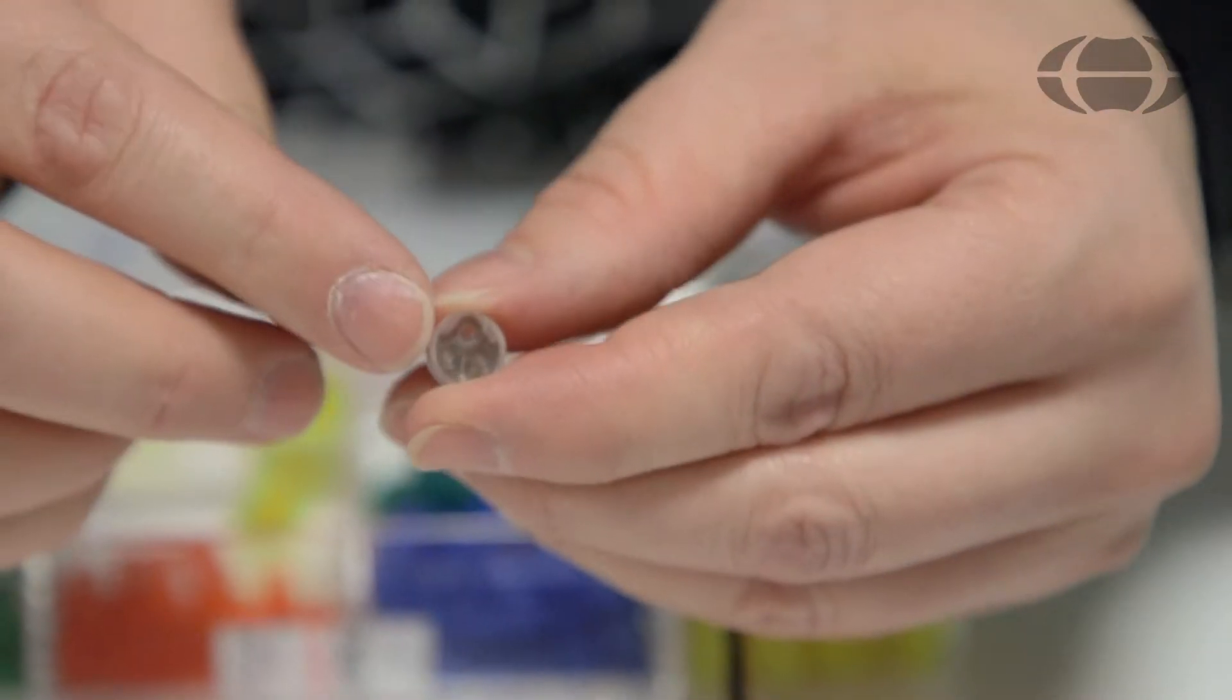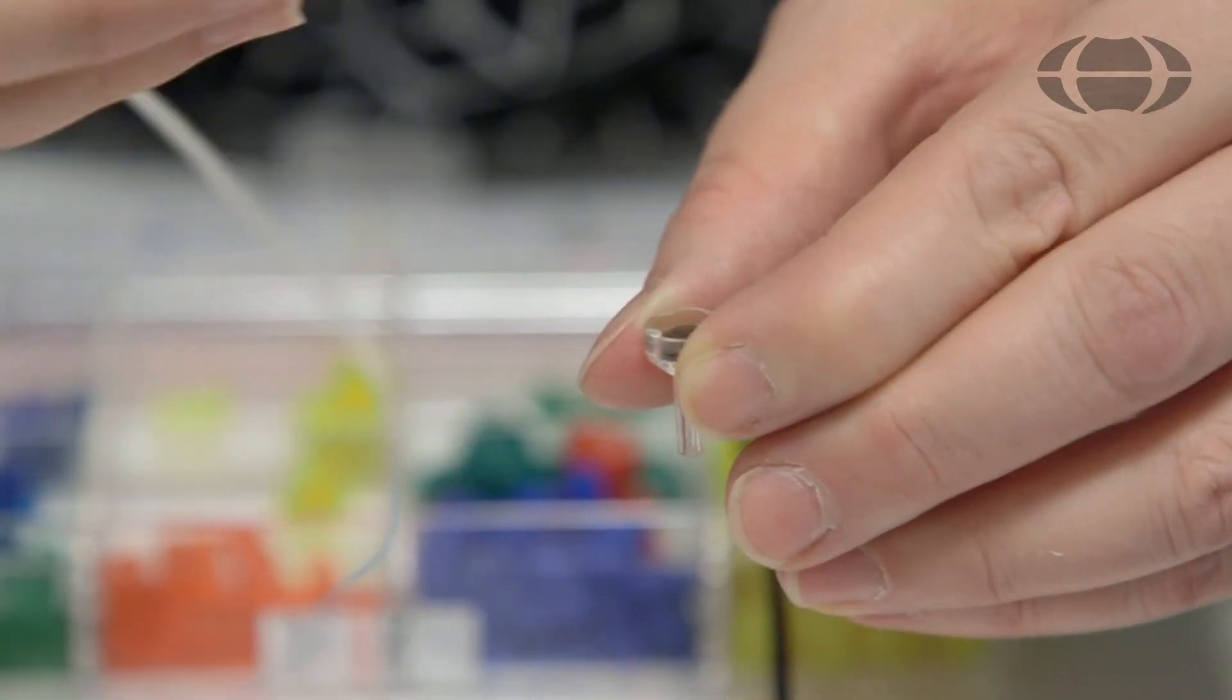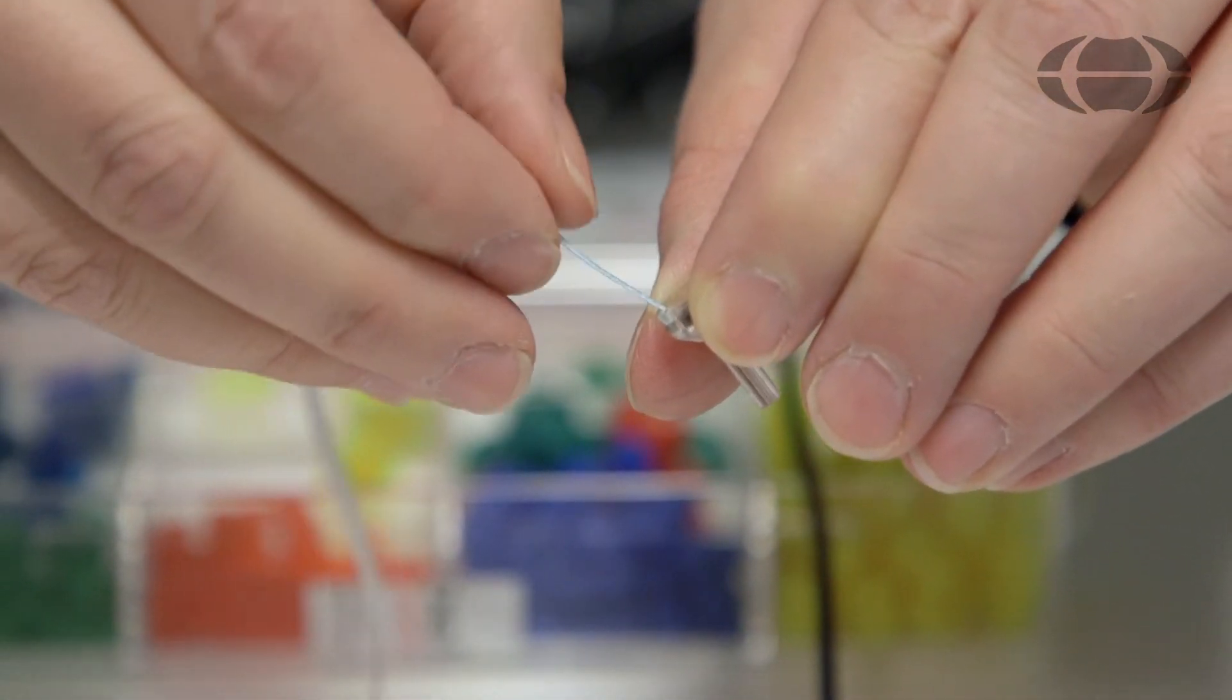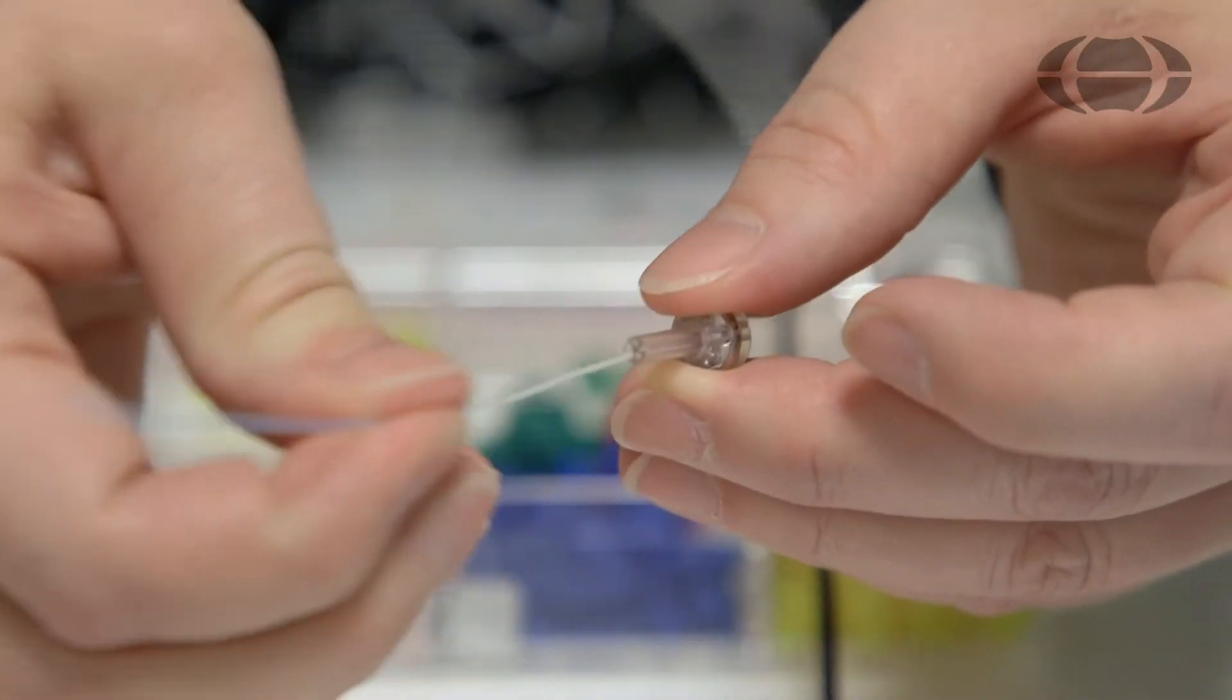There are small holes here where you can feed the floss through to clean it. Always feed the floss through this end and out through the top of the probe tip.